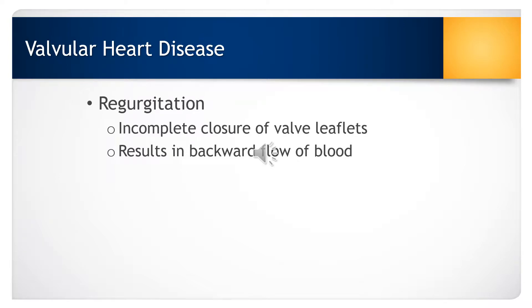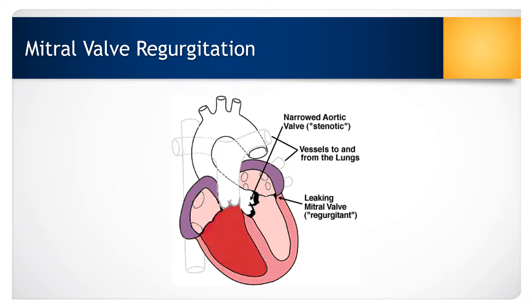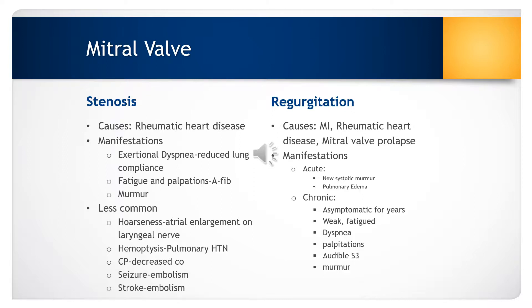In regurgitation, there is incomplete closure of the valve leaflets, which results in the backflow of blood. The most common cause of mitral valve stenosis is rheumatic heart disease. Less common causes can include congenital mitral stenosis, rheumatoid arthritis, and systemic lupus. The structural deformities can cause obstruction of blood flow and create a pressure difference between the left atrium and the left ventricle during diastole.